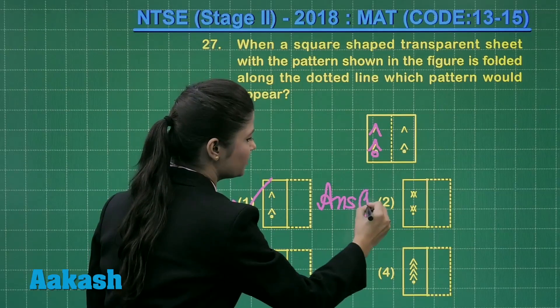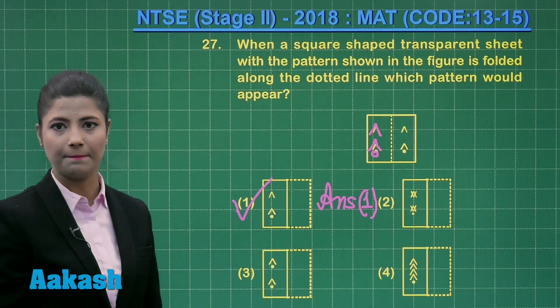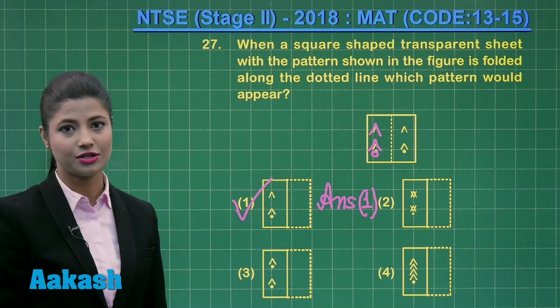We write here answer for this question number 27 is option number 1. Now let us move on to our next question.